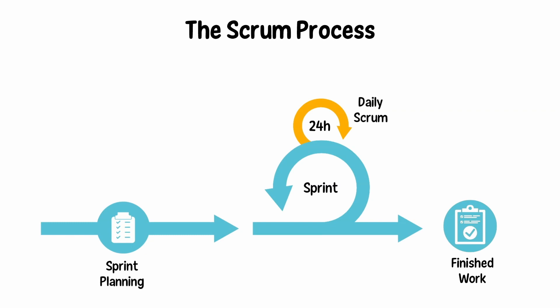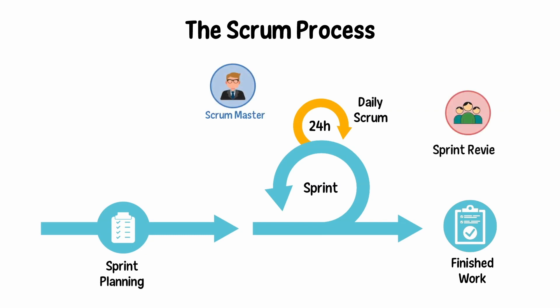Daily Scrum: on each day of a sprint, the team holds a typically 15-minute meeting to provide a clear update of the work the team has carried out, what they'll work on before the next meeting, and if any problems are seen.